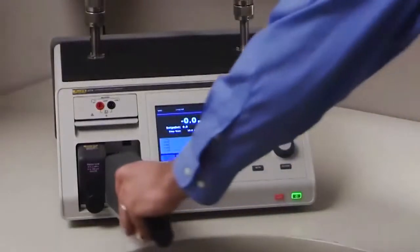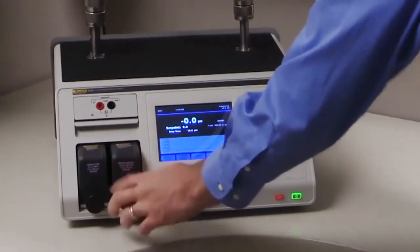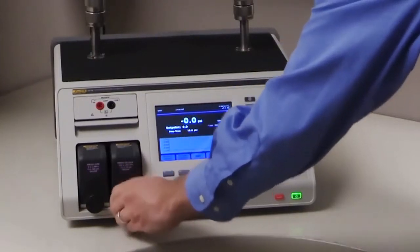Modules are easy to install. Simply slide a module into one of the two available slots. Then turn the torque limiting knob until it clicks.